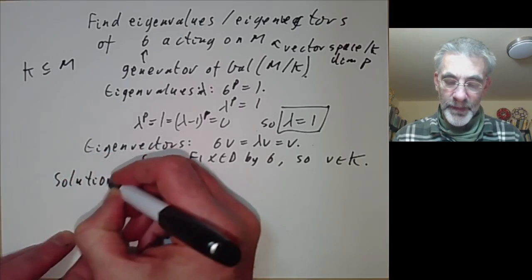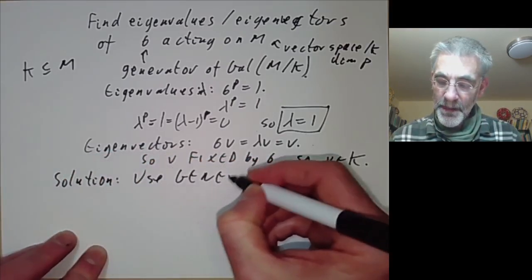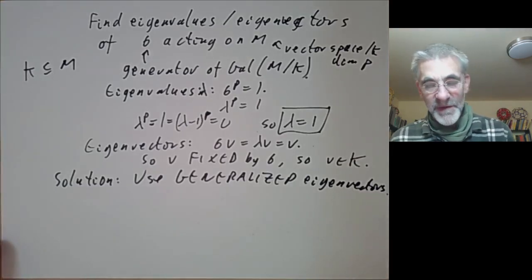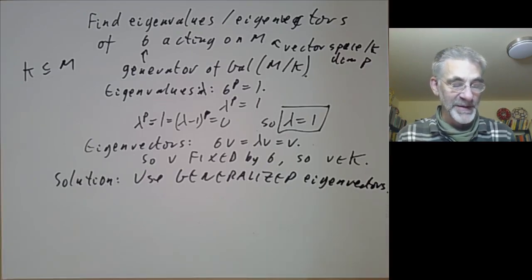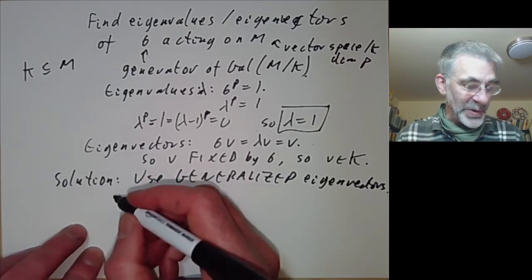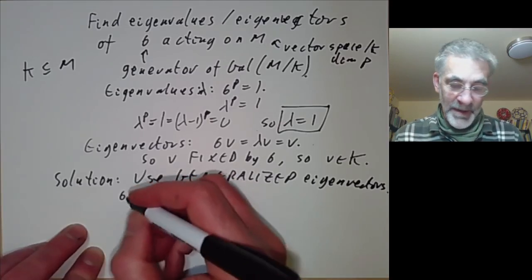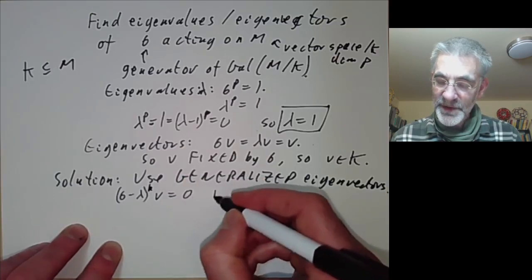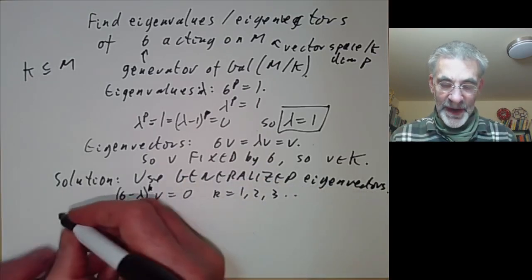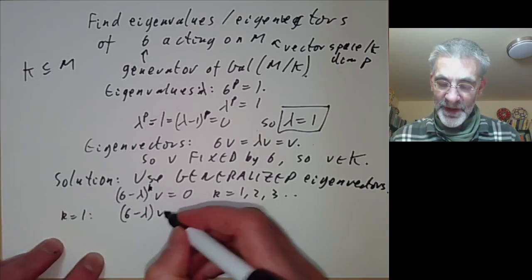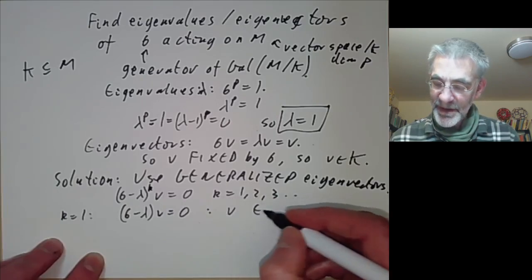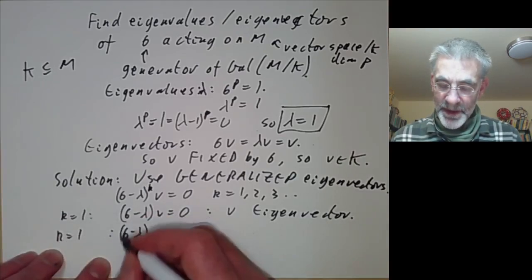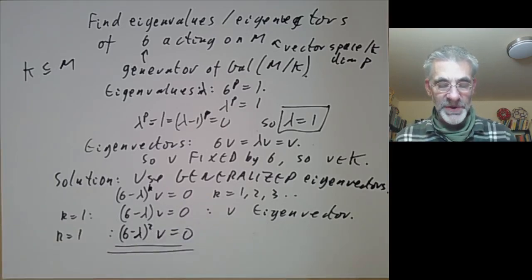The solution is to use generalized eigenvectors — these are things briefly mentioned in linear algebra courses that no one pays much attention to. A generalized eigenvector with eigenvalue lambda is something such that (sigma - lambda)^k V equals 0 for some k = 1, 2, 3, and so on. If k equals 1, this just says (sigma - lambda)V = 0, so V is an eigenvector in the usual sense. For k equals 2, we get (sigma - lambda)^2 of V equals 0, and this is the case we're going to be most interested in.